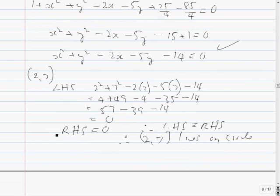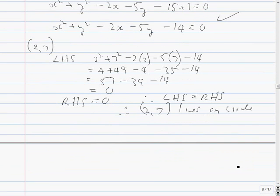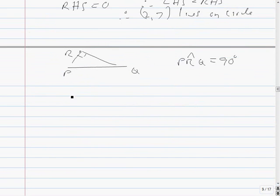Hence, state the size of angle PRQ. Well, PQ is a diameter. They've told us that. So it doesn't matter where R goes, that's bound to be a right angle. So PRQ equals 90 degrees. Show that R lies on C, we've done that. And hence, state the size of the angle. I'm going to put angle in a semicircle just to make sure they realize angle in semicircle. That would do. So that's number seven finished.